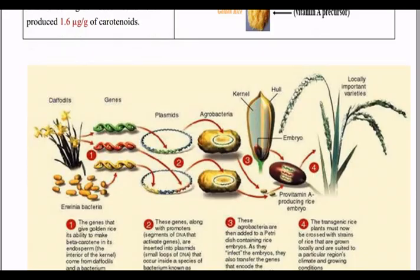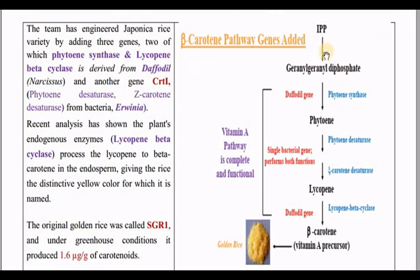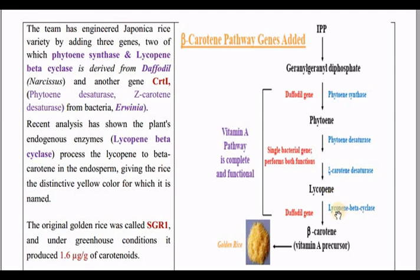We can see this in a flow chart. First, there is isopentyl pyrophosphate, which is already present in the rice endosperm. This is converted to geranylgeranyl diphosphate (GGDP). The newly introduced phytoene synthase gene converts GGDP into phytoene. Then, using the bacterial CRT1 gene, two enzymes — phytoene desaturase and zeta-carotene desaturase — convert phytoene into lycopene. Finally, the lycopene beta-cyclase gene converts lycopene into beta-carotene, which is the vitamin A precursor.